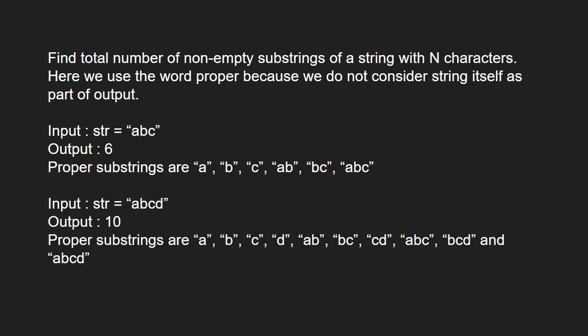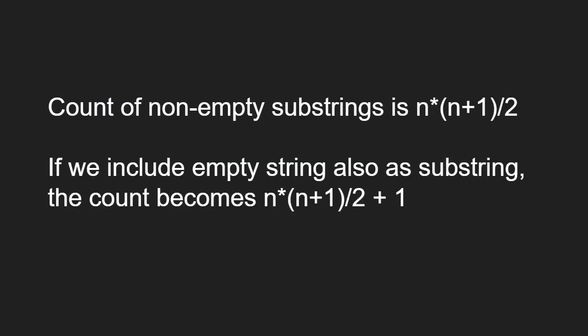Next, let us see the approach. Count of non-empty substrings is n*(n+1)/2. If we include empty string also as a substring, the count will become n*(n+1)/2 + 1.